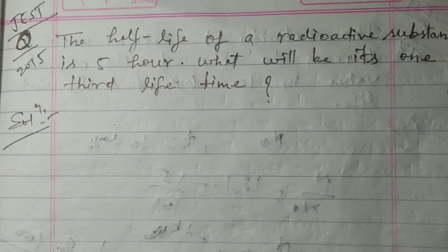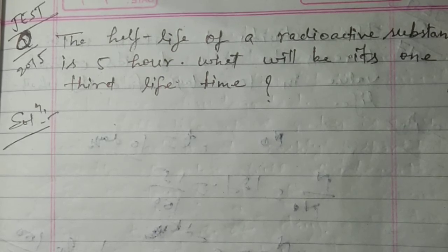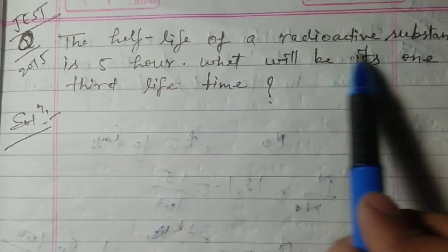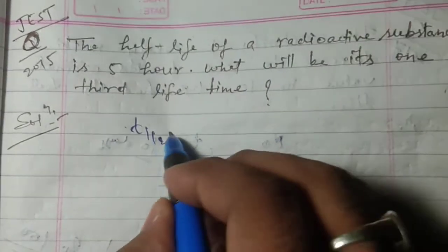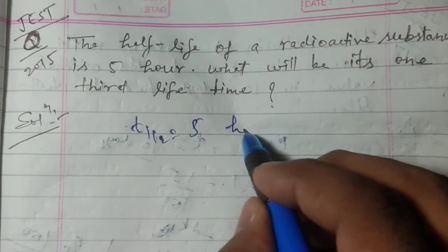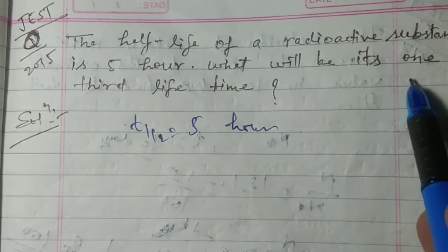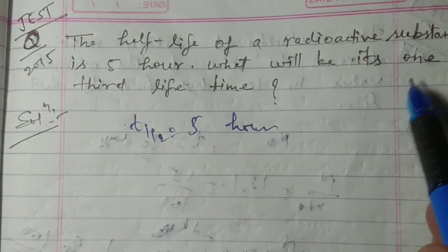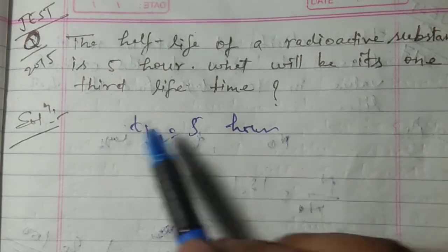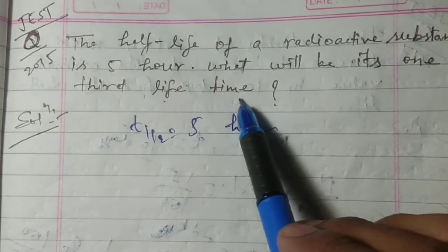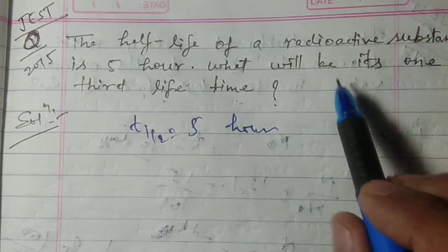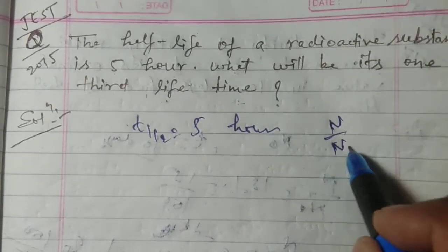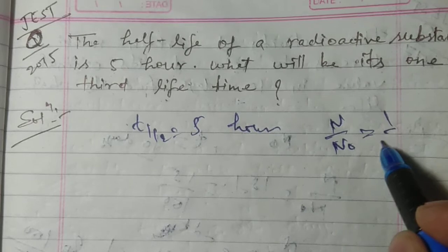Now the next question is really very simple. The half-life of a radioactive substance is 5 hours, that is t half equal to 5 hours. What will be its one-third lifetime, not half-life? What will be its one-third lifetime? So this will give N upon N naught equal to 1 by 3.